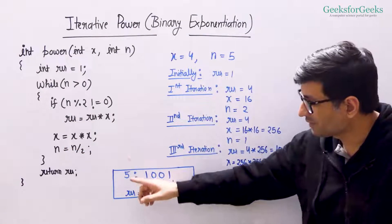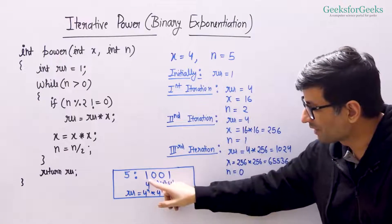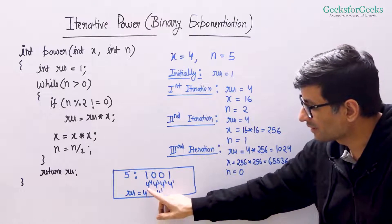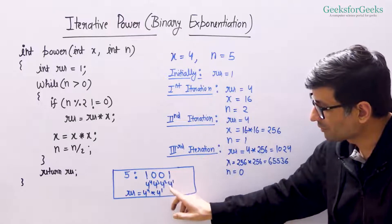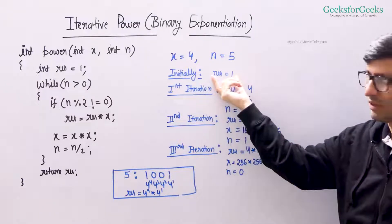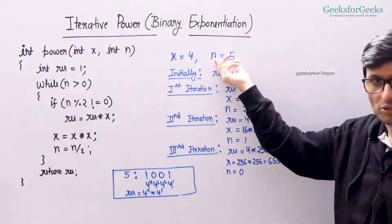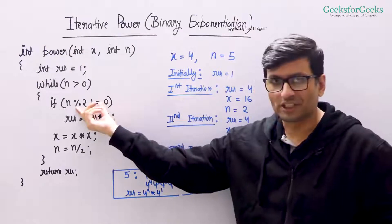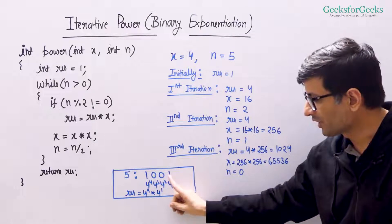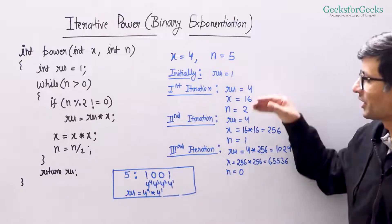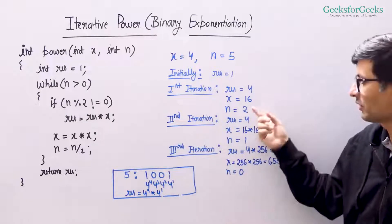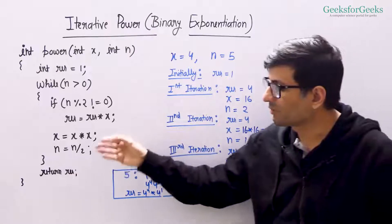Let's do a dry run. Say we want to compute 4 raised to the power 5. The binary representation of 5 is 1001. So we are going to compute the result as 4 raised to the power 4 multiplied by 4 raised to the power 1. We initialize result as 1. In the first iteration, n equals 5, which is odd, so the last bit is 1 — we multiply result by x, giving result equals 4. Then we do x equal to x squared, so x becomes 16. Then n becomes 2.